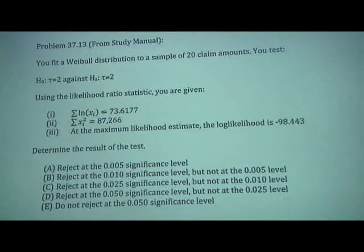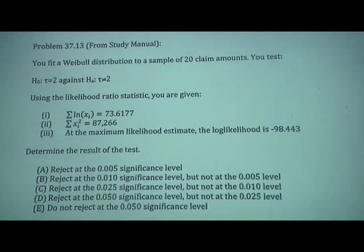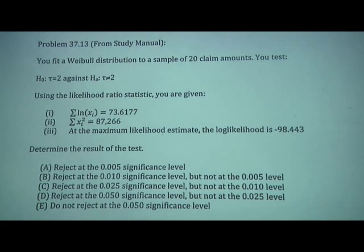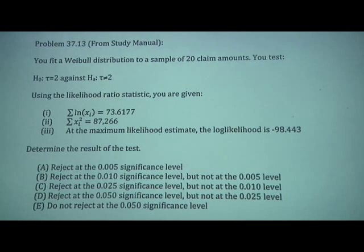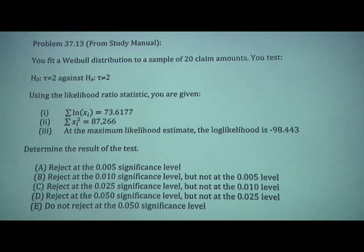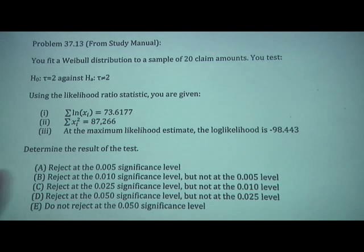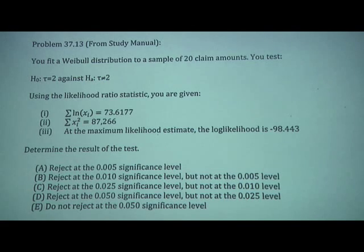We're doing problem 37.13 from the study manual for the C4 exam. You fit a Weibull distribution to 20 claim amounts and test H-naught: tau equals 2 against H-alternative: tau does not equal 2. You're given three pieces of information, and the problem asks you to find the result of the test.